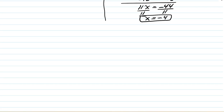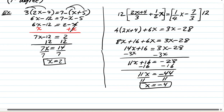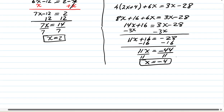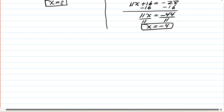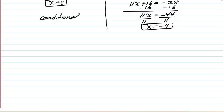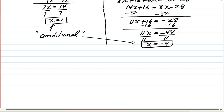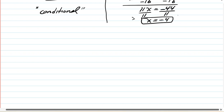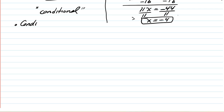Now, those two examples only work for specific values of x — x equals 2 and x equals negative 4 respectively. These kinds of equations are called conditional equations. They only work under a specific condition: x must equal a particular value. Conditional equations have a finite number of solutions that only work for those specific values.